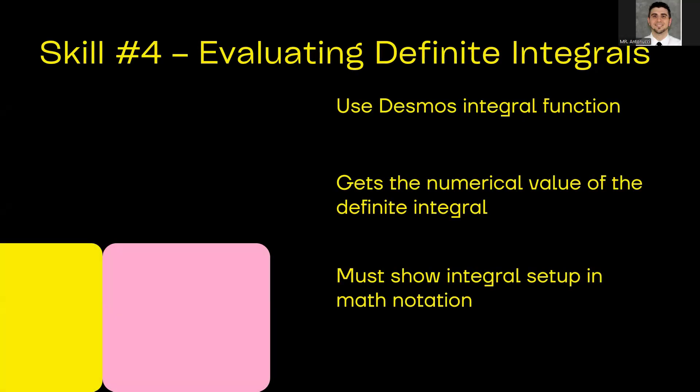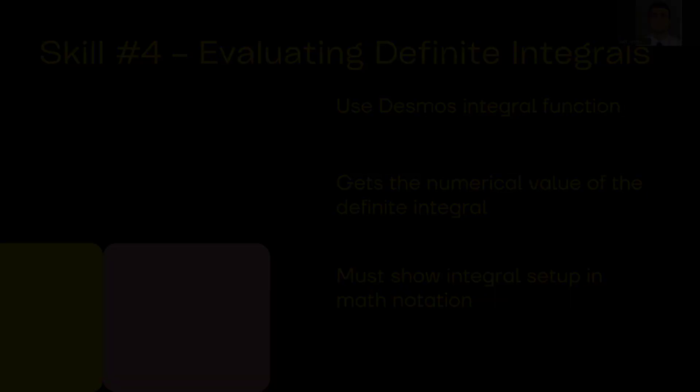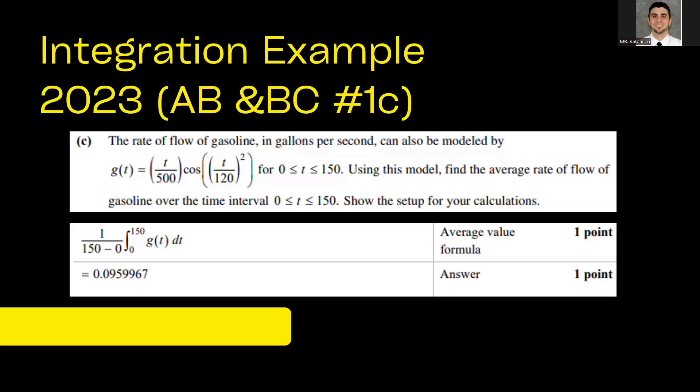Okay, so the fourth and final skill that you need in order to have success on the AP calculus exam with Desmos is being able to evaluate definite integrals using Desmos. Now, thankfully, Desmos has an integral function, and Desmos is going to give you either the exact value, if it's a rational number, you can do that, or the decimal approximation to enough decimal places. Now, as with the other examples, you need to make sure that you show the integral setup and using correct mathematical notation.